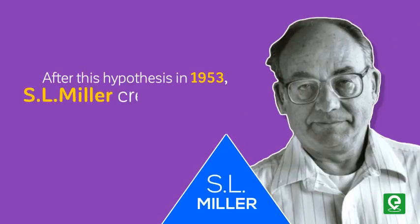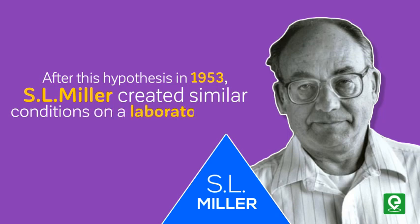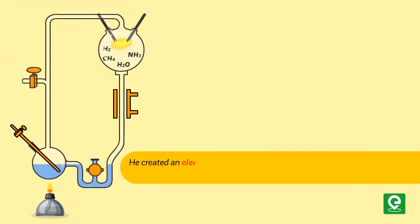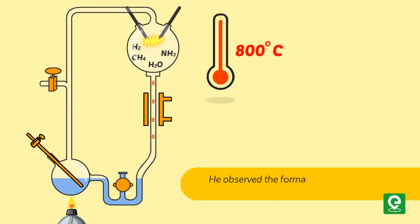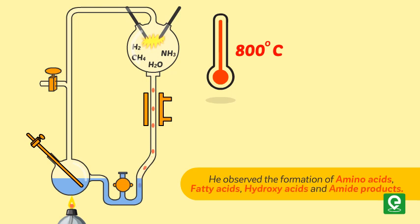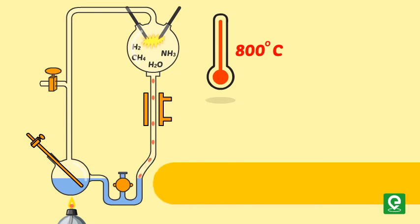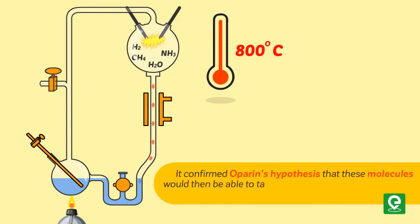In 1953, Stanley L. Miller created similar conditions on a laboratory scale. He created an electric discharge in a closed flask containing methane, hydrogen, ammonia, and water vapor at 800 degrees Celsius. He observed the formation of amino acids, fatty acids, hydroxy acids, and amide products.